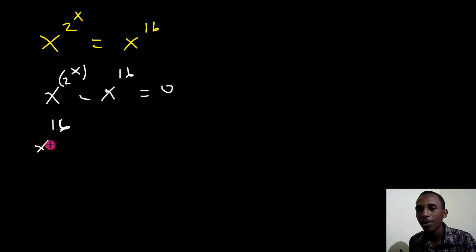Let me factorize out x to the power 16. So x to the power 16, I'll factorize that out. So that leaves me with x to the power 2 to the power x minus 16 minus 1 because of this equals 0.